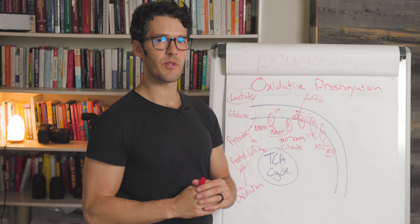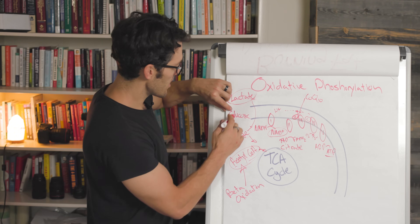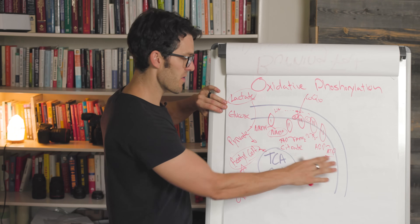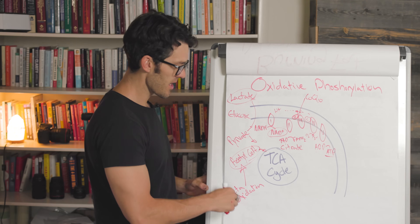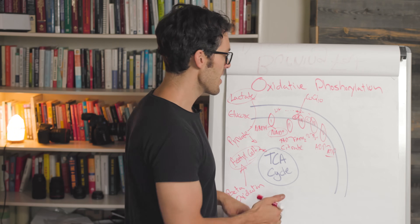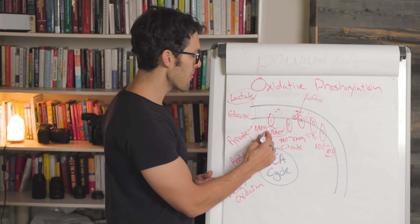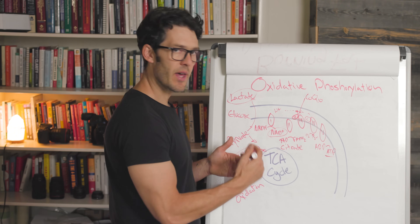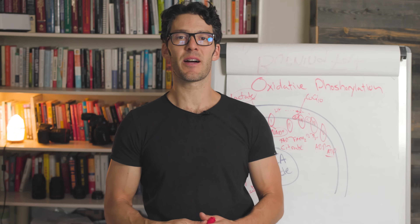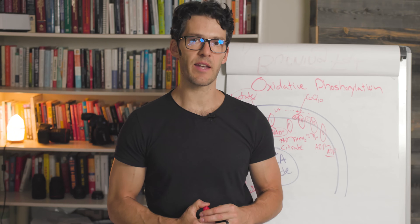To wrap up the numbers: oxidizing glucose yields around 32 molecules of ATP. Oxidizing palmitic acid — a 16-carbon long fatty acid — makes 110 sub-molecules of ATP and many more NADHs through the beta oxidation process. That's kind of how fat is burned on a geeky level. On Sunday, we'll drop the video on fat recycling.